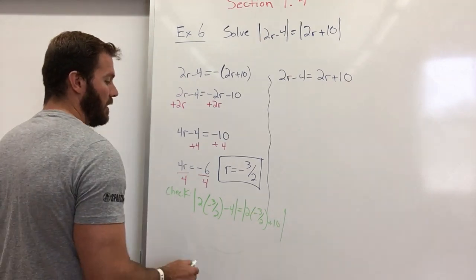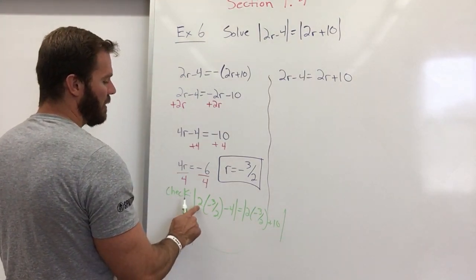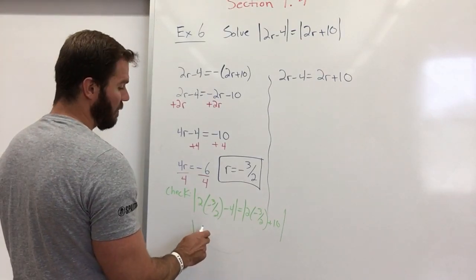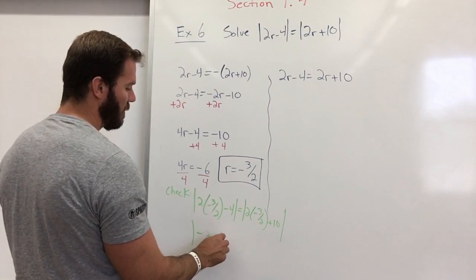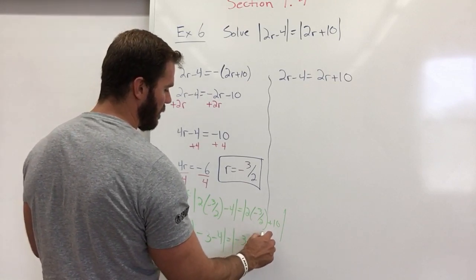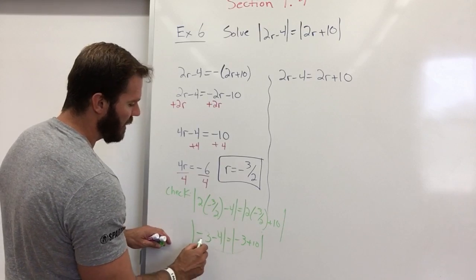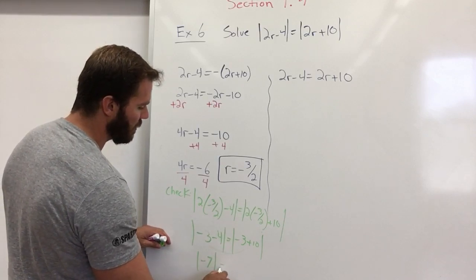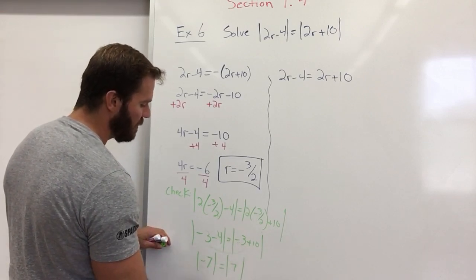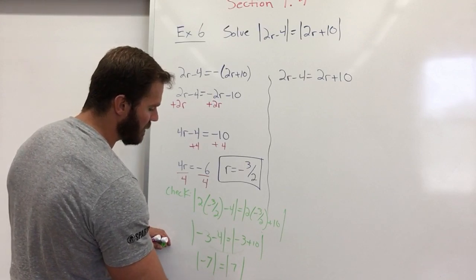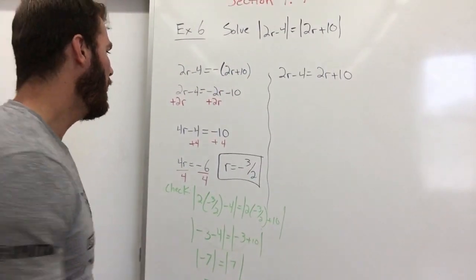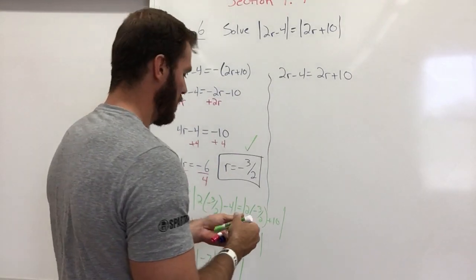It looks like a lot. So we've got 2 times a negative 3 over 2, which is negative 6 over 2. Negative 6 over 2 equals negative 3. Same thing right there. So the absolute value of negative 3 minus 4 is negative 7 equals the absolute value of negative 3 plus 10, which is 7. Absolute value of negative 7 is 7. Absolute value of 7 is 7. 7 equals 7. This is good. That is a good answer.